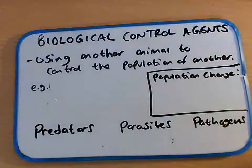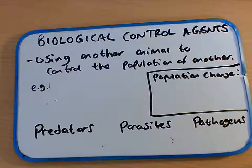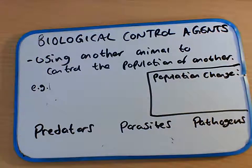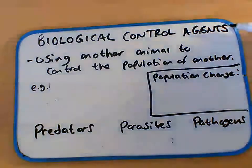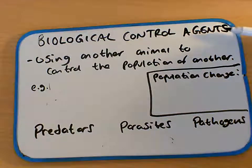We've had a look at how we can monitor population, estimate population size, sample them, capture and recapture. So let's finish off the unit now looking at how we can control populations.